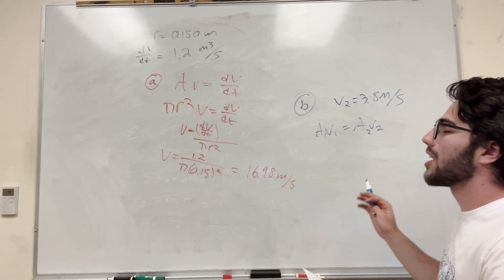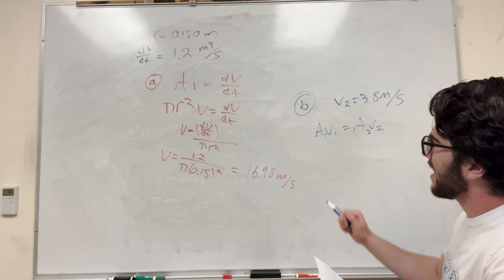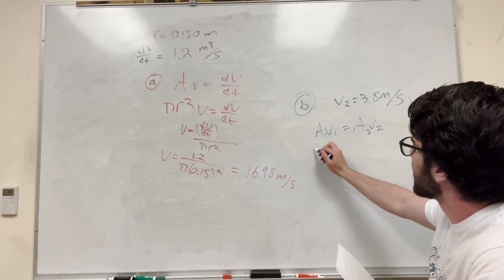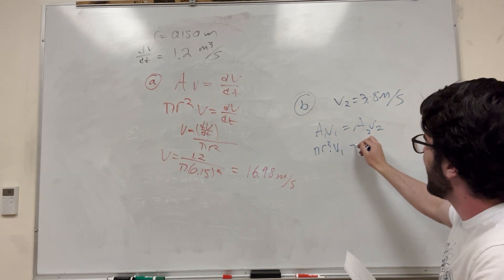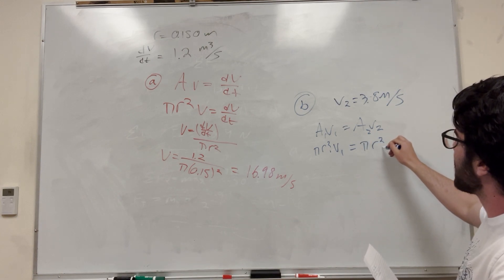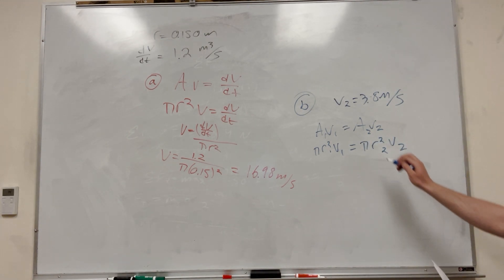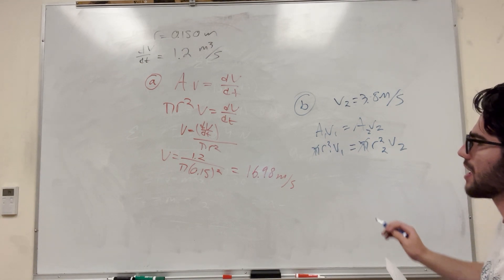So we have velocity, not volume. The area at point 1 is πr₁² times v₁ equals πr₂² times v₂. The π's cancel, which is one less thing to plug into your calculator.